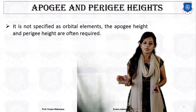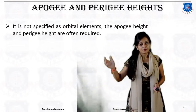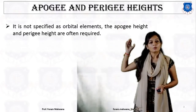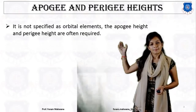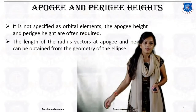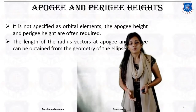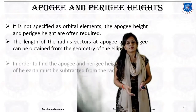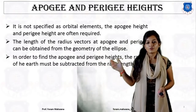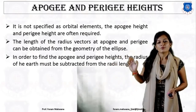First of all, we need to understand what apogee height and perigee height are. These two terms are not specified as orbital elements, but the apogee height and perigee height are often required because the length of the radius vector at apogee and perigee can be obtained from the geometry of the ellipse. To find the apogee and perigee height, we must know the radius of the earth, the radius of apogee, and the radius of perigee.